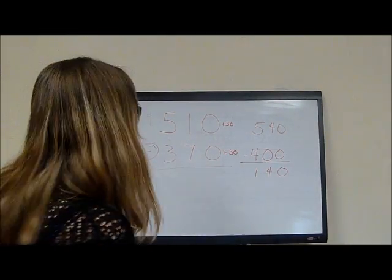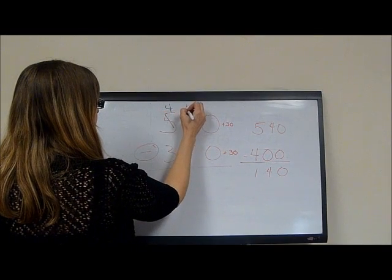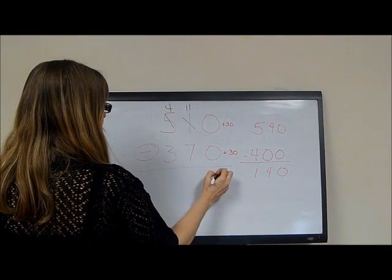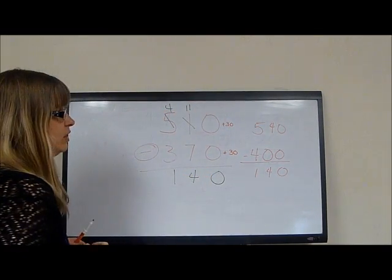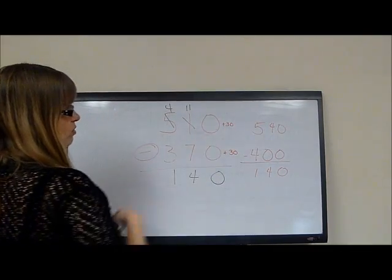Now if we did it with the old borrowing, we would borrow 1 over here and make this an 11. We would have 0, we would have a 4 and a 1. So you can see we get the same numbers. But they really want you to do this higher order thinking.